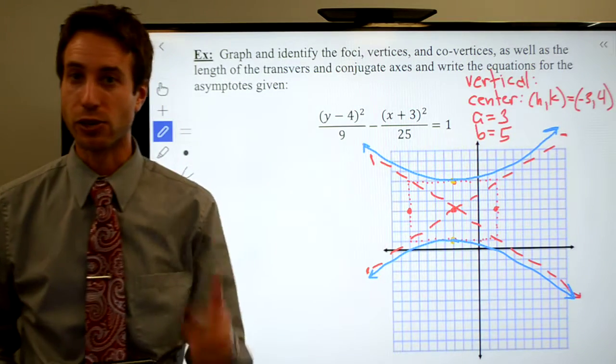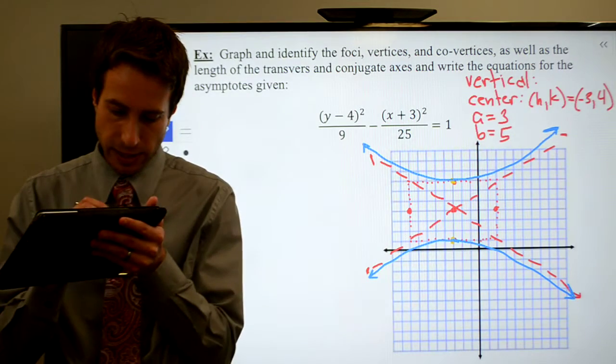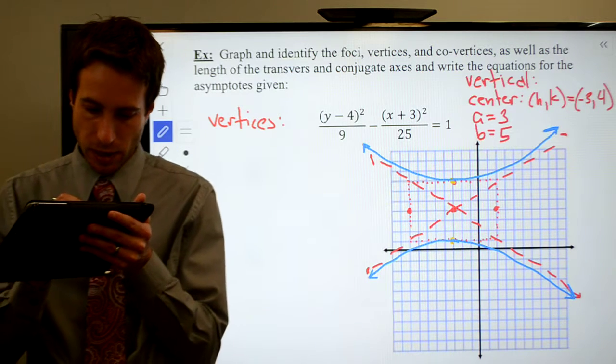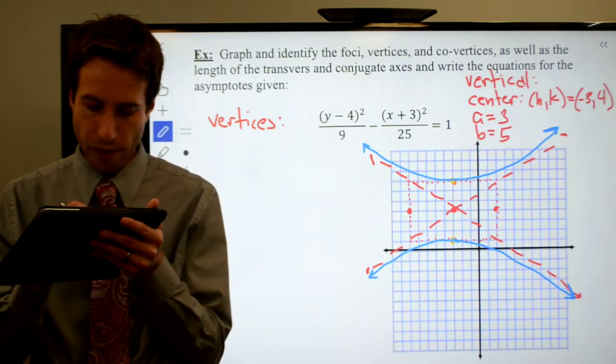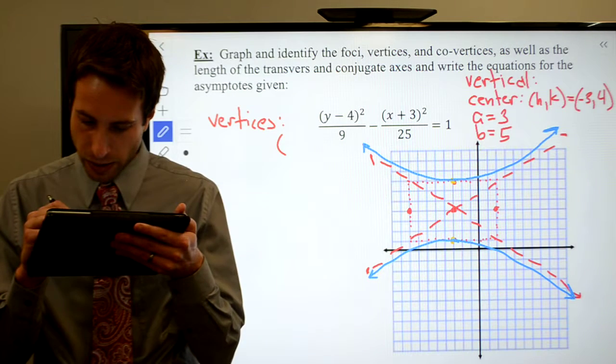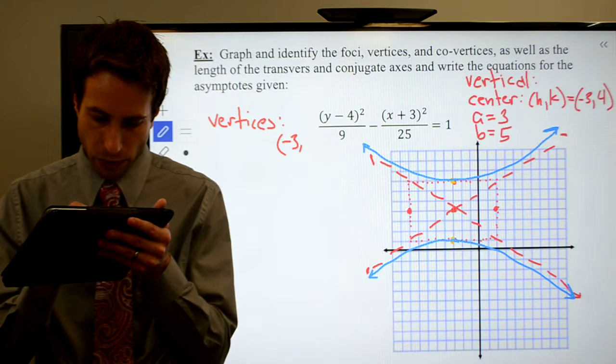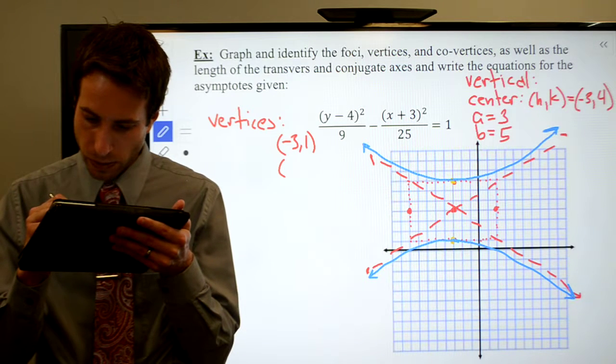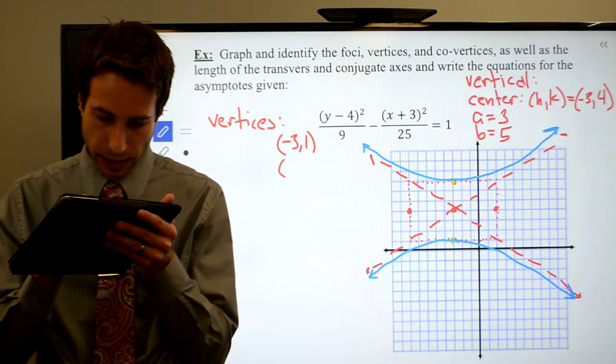I already found the center, so let's get the vertices and the co-vertices. The vertices, there are two of them. They are at negative 3, 1 and negative 3, 7.